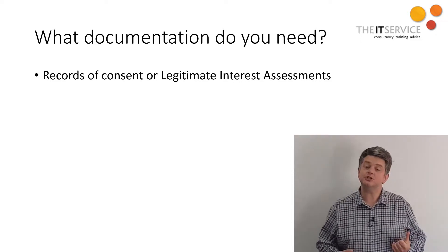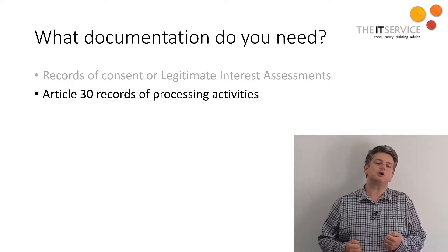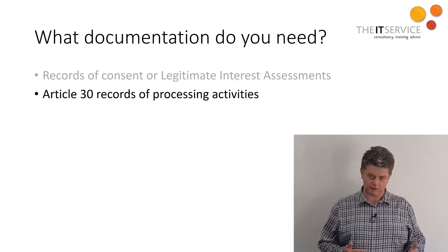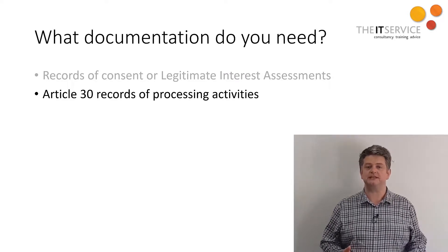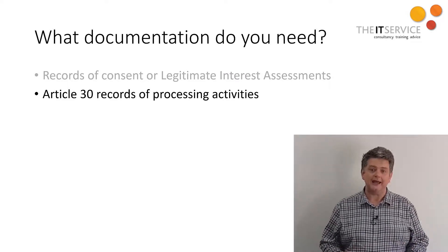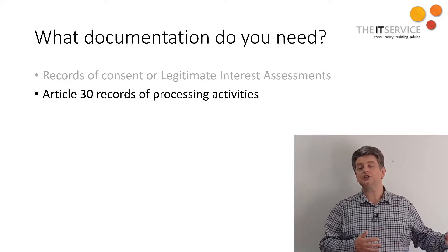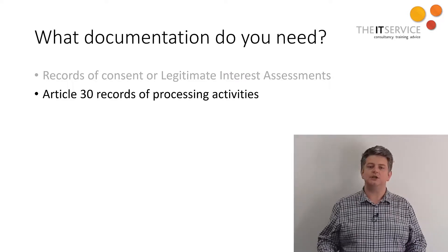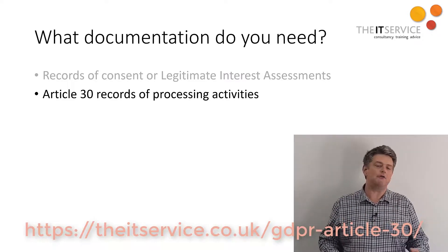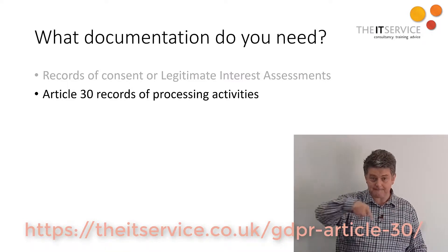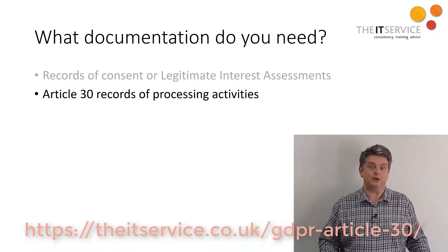Beyond that, you'll need to document what you're doing with data more generally. The requirements for this are in Article 30 of the GDPR — so they're often known as Article 30 records of processing activities. There's quite a lot to record here, and different things depending on whether you're controlling the data or you're just processing it on behalf of somebody else. For more information about what's required, I can't recommend highly enough a brilliant blog post — just follow that link. Yes, of course it's a bit of shameless pluggery because we wrote the article.